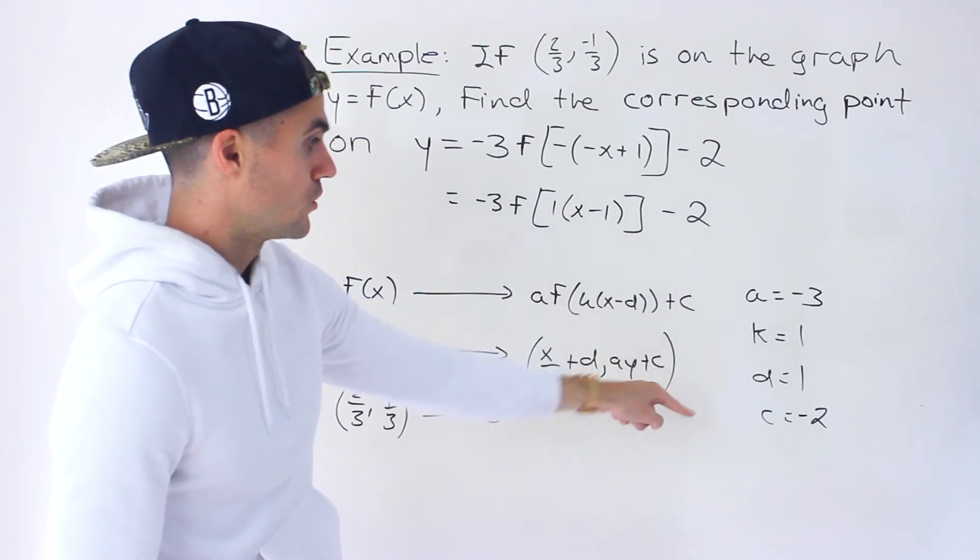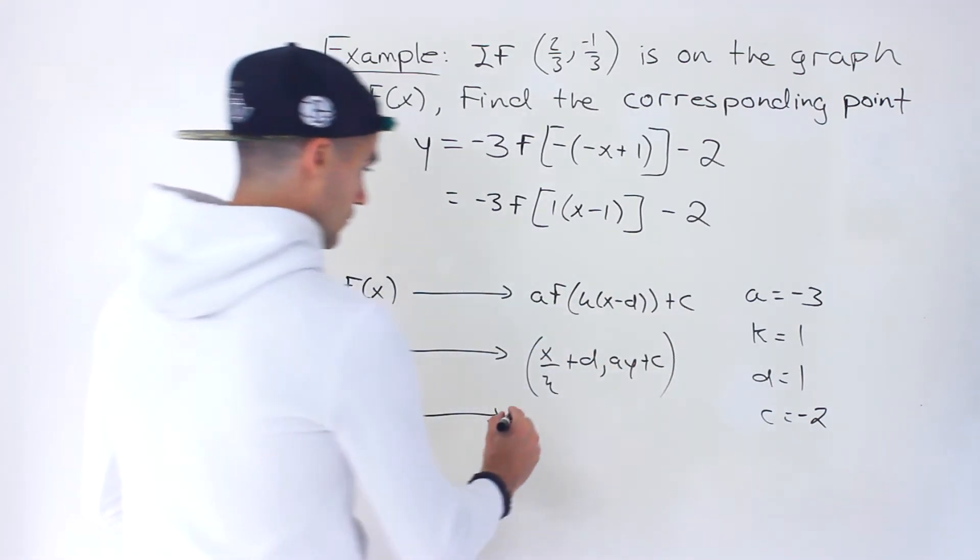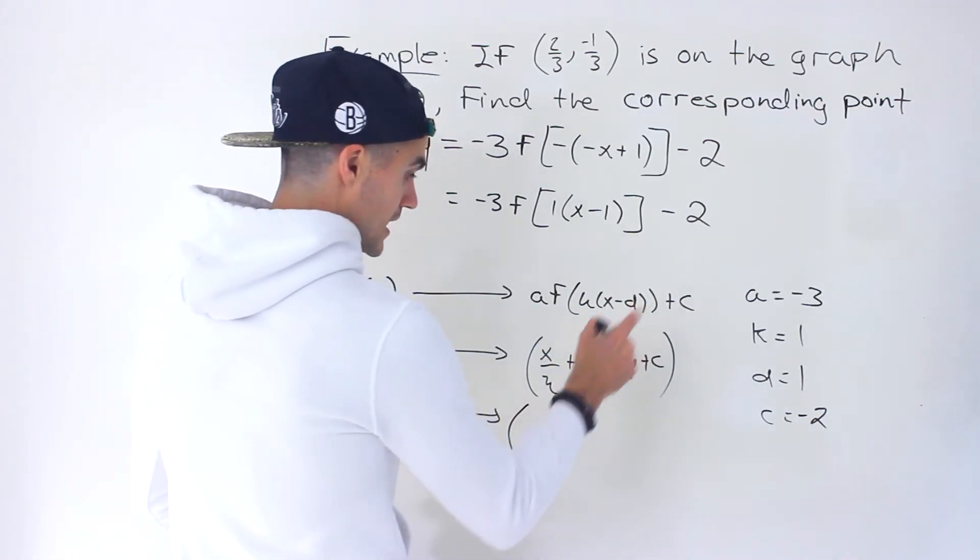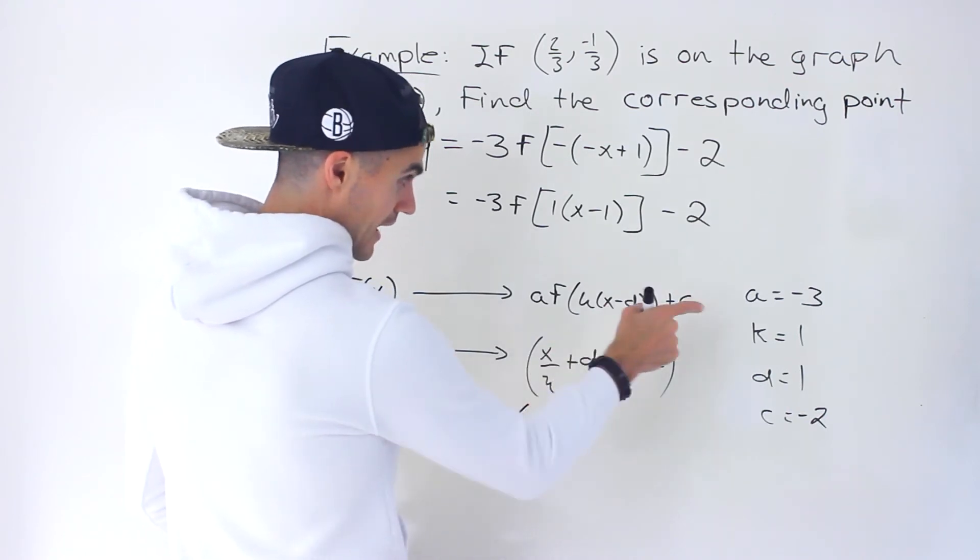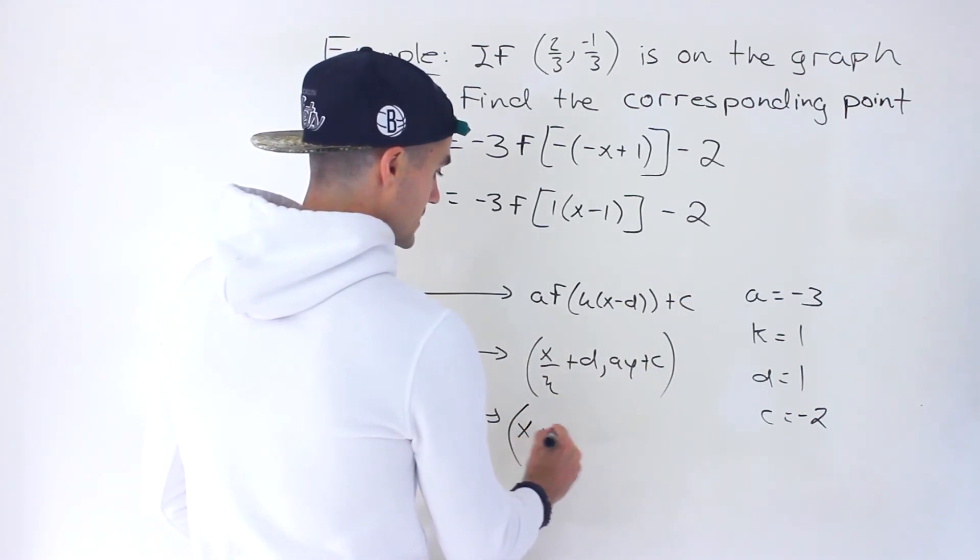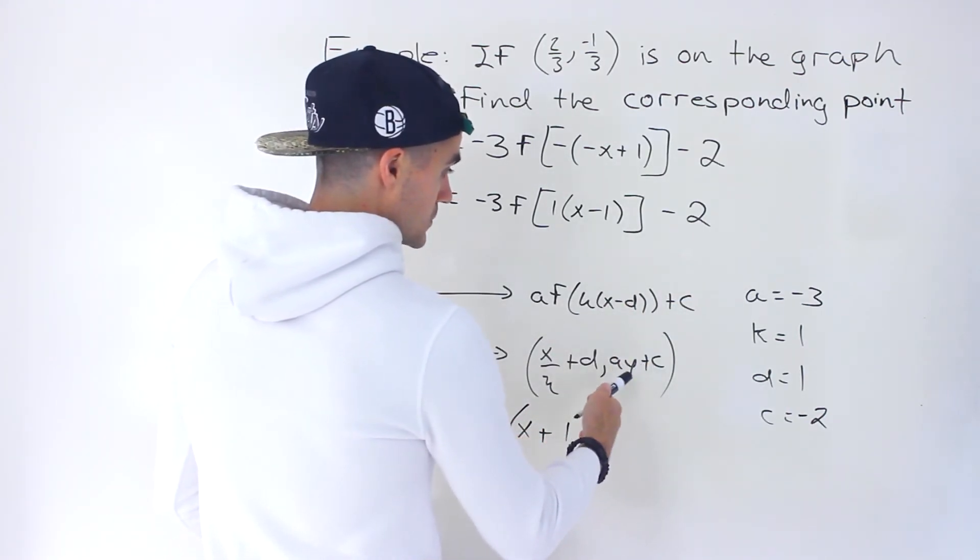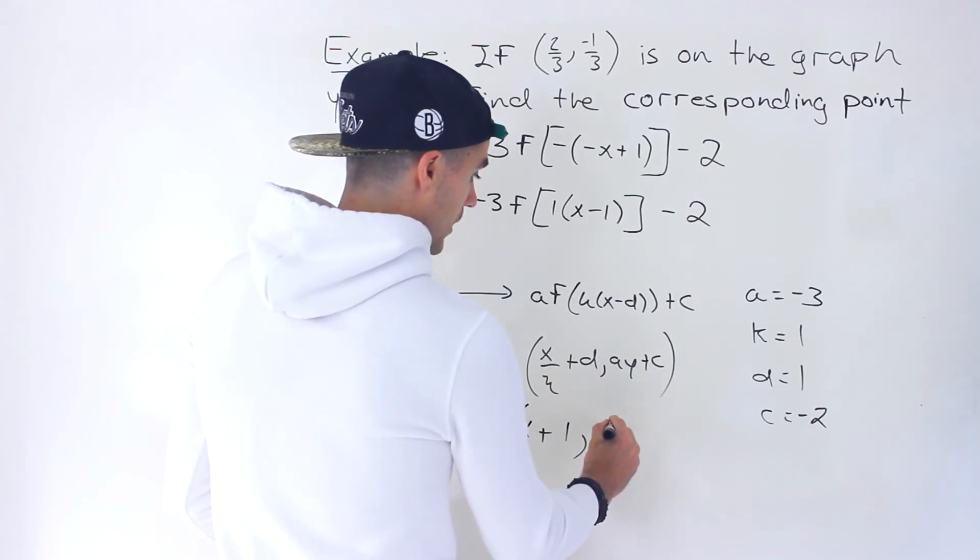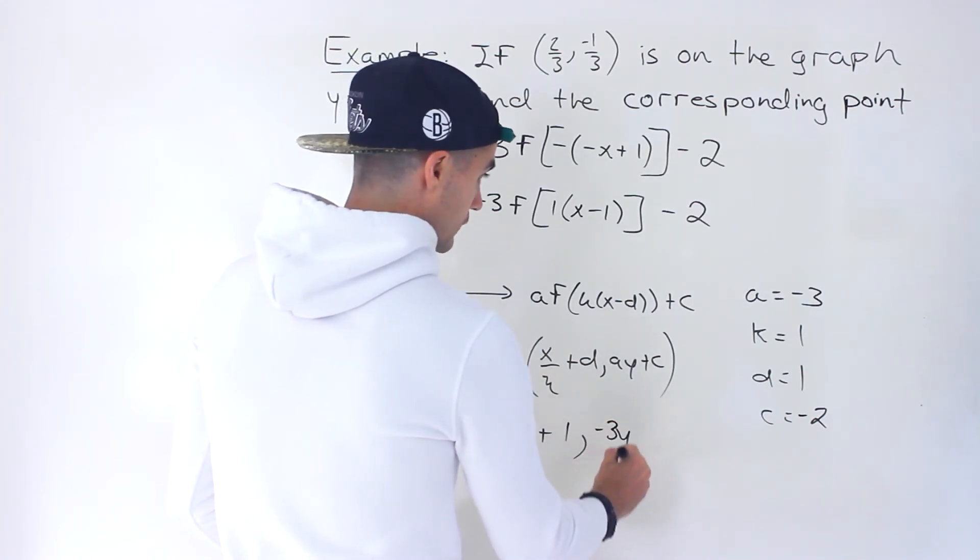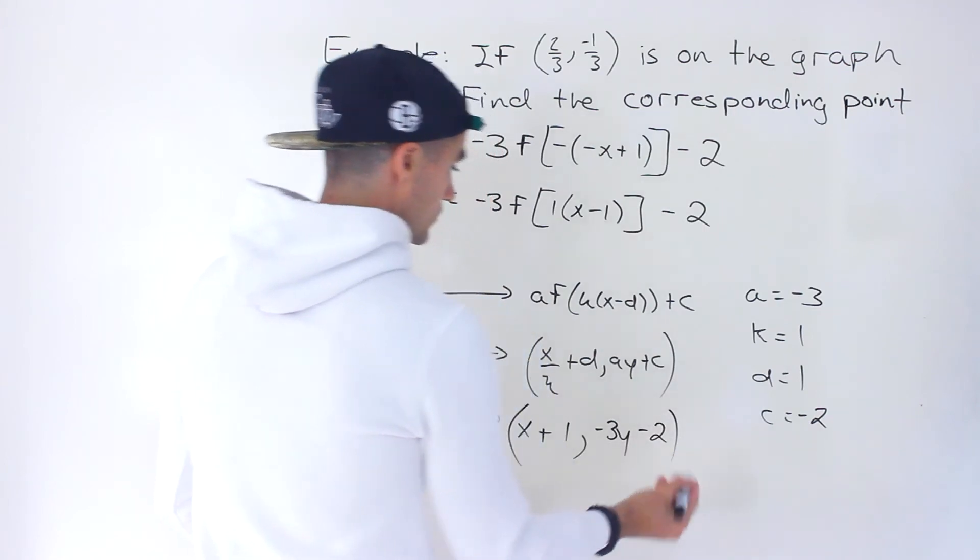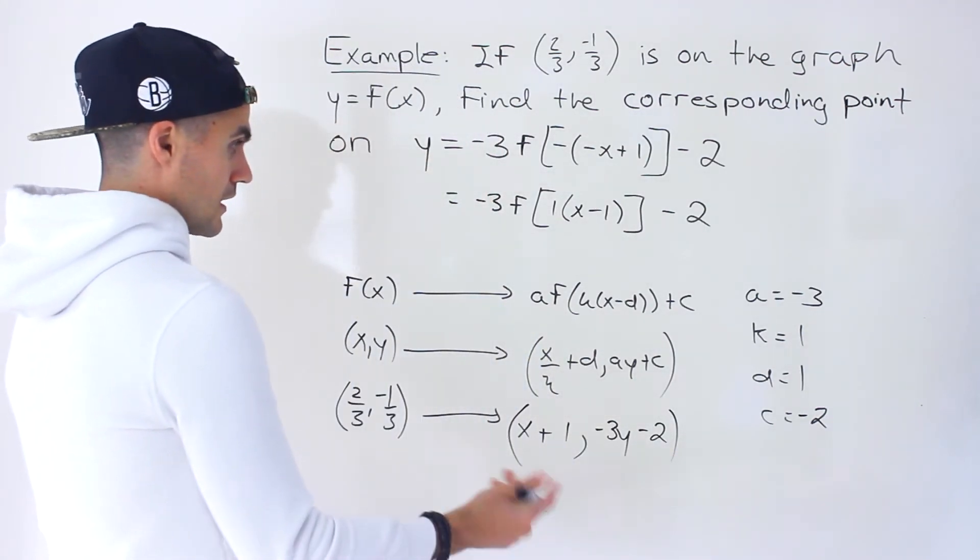All right? So those are the values. And so what we have to do is basically take all of the x values divided by the k value of 1. And then we add the d value of 1. And then we would take all the y values, multiply it by negative 3, and then subtract 2, like that. And that's pretty much it.